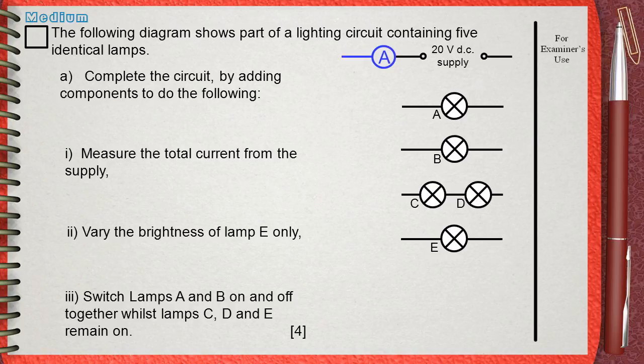Number 2: Vary the brightness of lamp E only. The variable resistor is the component that changes the current. And this will vary the brightness of lamp E. So put a variable resistor in series with lamp E.